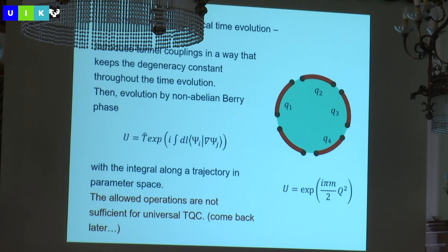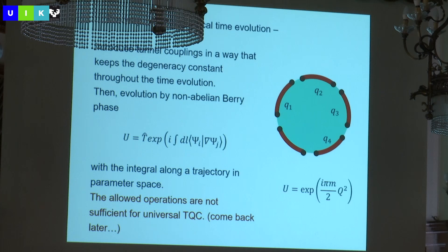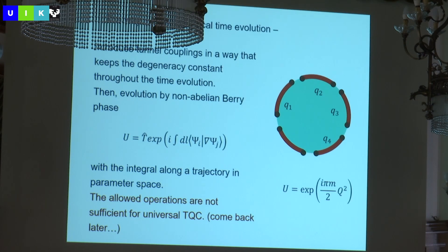For topological quantum computation, an important question is whether the set of operations is sufficiently diverse to create a universal set of quantum gates. The answer is negative for Majoranas, and slightly less negative for parafermions, but still negative. How to change that to positive is a very interesting subject — it is possible, but requires more complicated constructions.